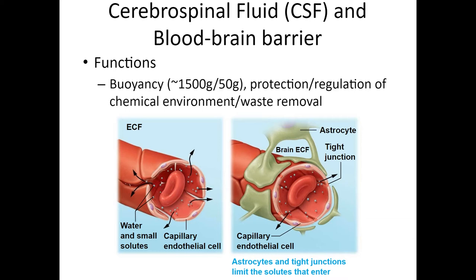Cerebral spinal fluid is associated with the blood-brain barrier. Astrocytes — the neural glial cells of the central nervous system — wrap around capillaries to form this barrier. CSF is secreted and filtered by ependymal cells and serves multiple functions: buoyancy (allowing the brain to float rather than be crushed under its own weight on top of the skull), protection, and regulation of the chemical environment. Tight junctions seal the area to prevent bacteria and viruses from entering the central nervous system.